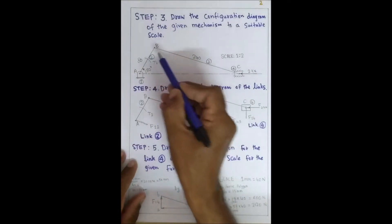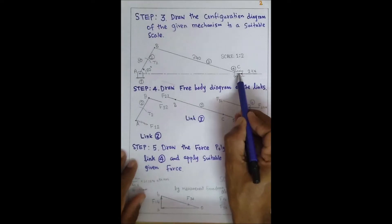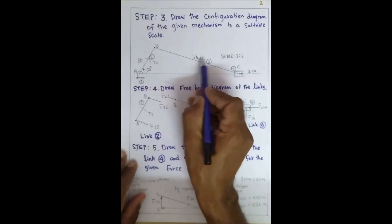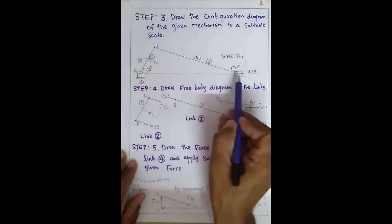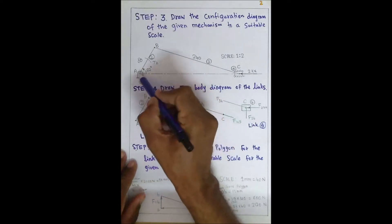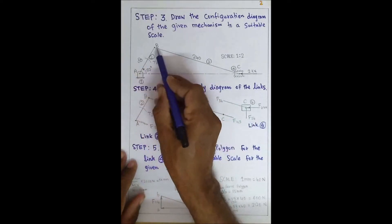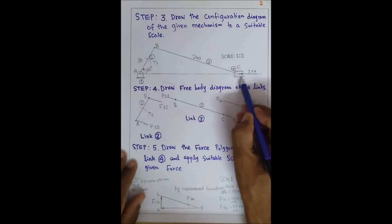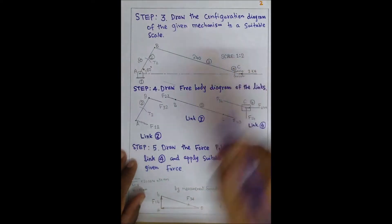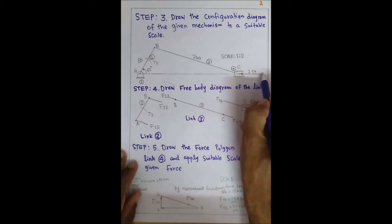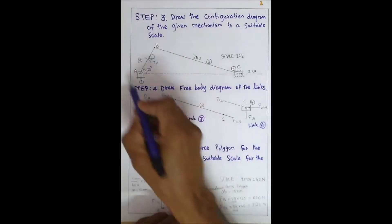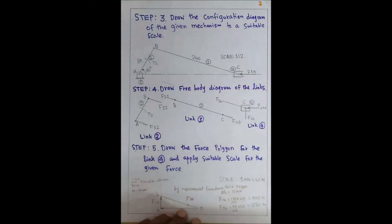From point B, draw another line to C representing the connecting rod BC. The original length is 240 mm, so at scale 1:2, draw it as 120 mm. Now we have points A, B, and C. The fourth link is the piston — draw it at any suitable size. On the piston, a 2 kN horizontal force is acting. This completes the configuration diagram.